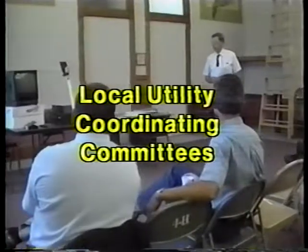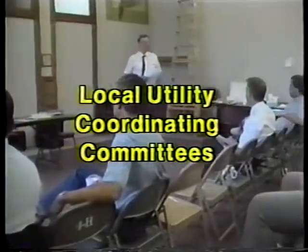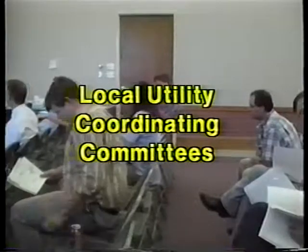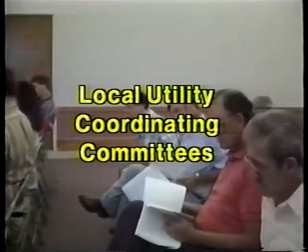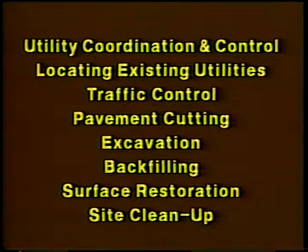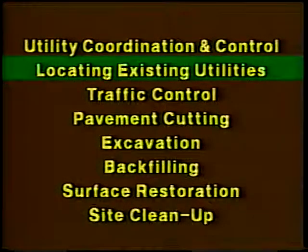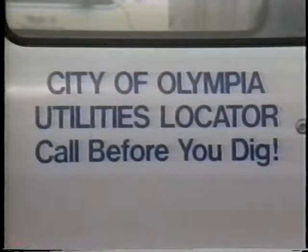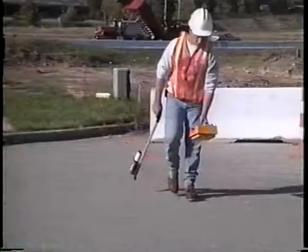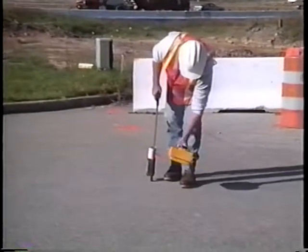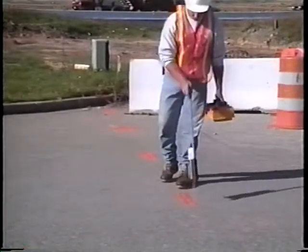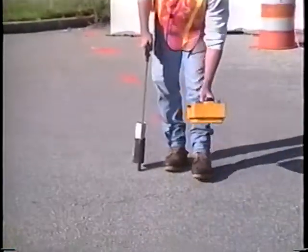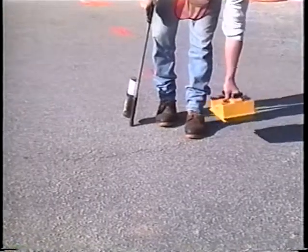In addition, local utility coordinating committees should be formed by utility and agency personnel so that they can get acquainted with each other, discuss plans and problems, and coordinate activities during regularly scheduled meetings. Most states have laws requiring anyone who intends to excavate to first find out what underground utility facilities are in the area where digging will be done. These need to be located as accurately as possible and temporarily marked on the surface as a guide to the excavator. Such precautions are aimed not only at safeguarding the underground facilities, but also at protecting workers and anyone else in the vicinity.